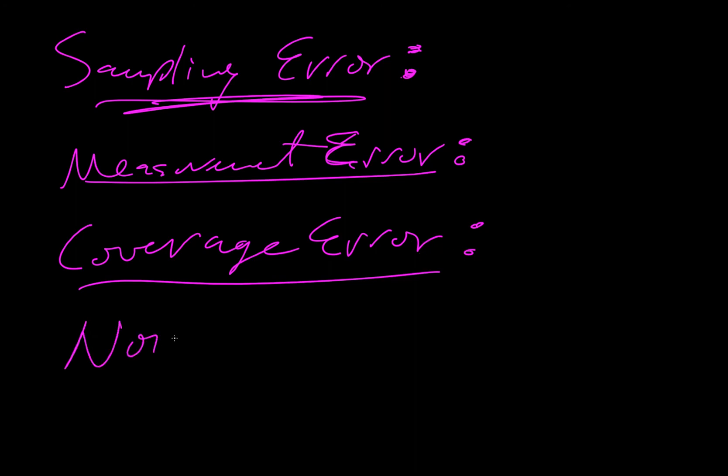And then we have a non-response error and these are errors that occur when a large number of people selected for a survey choose not to respond to it. For example, an online survey is less likely to be completed by elderly people who are unfamiliar with technology. This means that elderly people will be underrepresented in that survey.